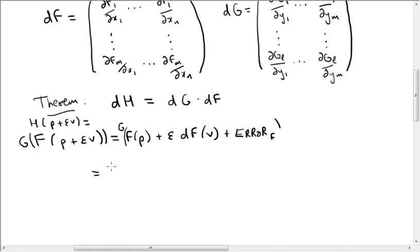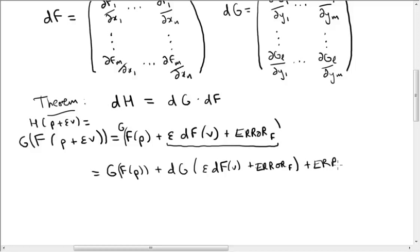And we get, by the Taylor expansion of g, g of f of p plus dg of this whole term here. So that's epsilon df of v plus the error in f. And then we get a correction term, which is the error in g.